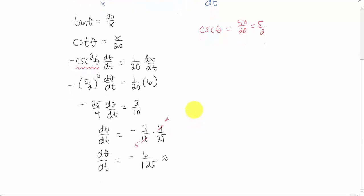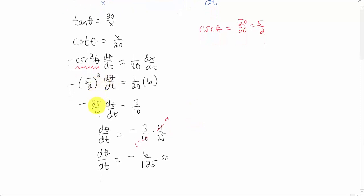Okay, solving for d theta/dt involved squaring this fraction. It involved multiplying both sides by 4 over 25, bringing the negative sign over, simplifying, and I got negative 6 over 125.